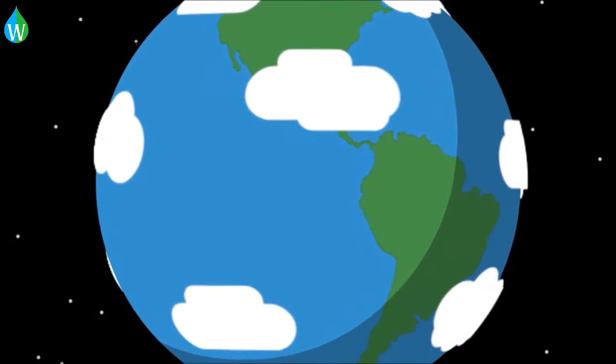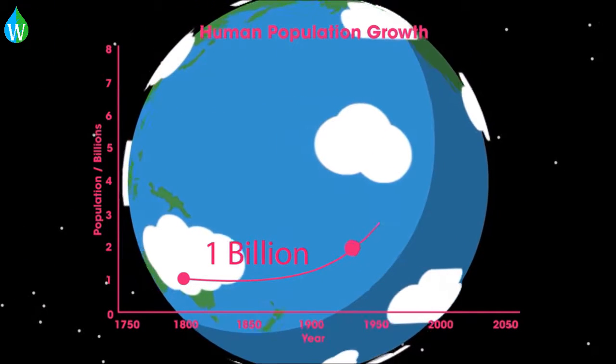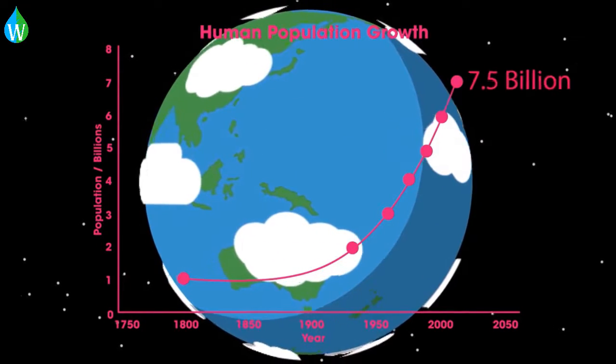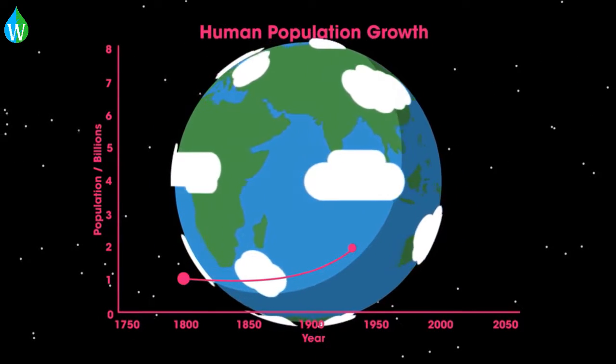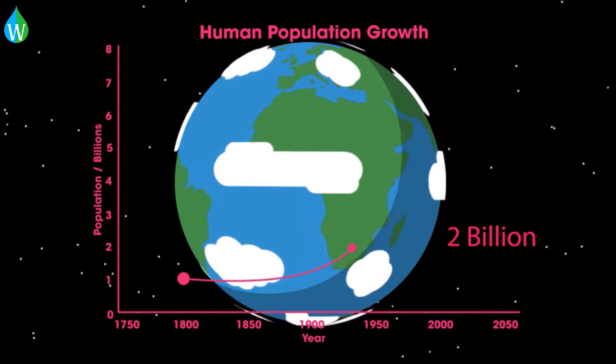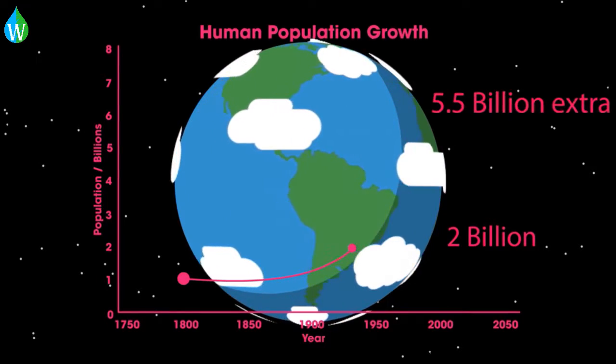It took hundreds of thousands of years for the human population to reach 1 billion. And in less than 200 years that has increased to nearly 7.5 billion people. Many scientists calculate the sustainable population to be about 2 billion people, which means we need to manage our resources and food production very carefully to cater to the extra 5.5 billion people.